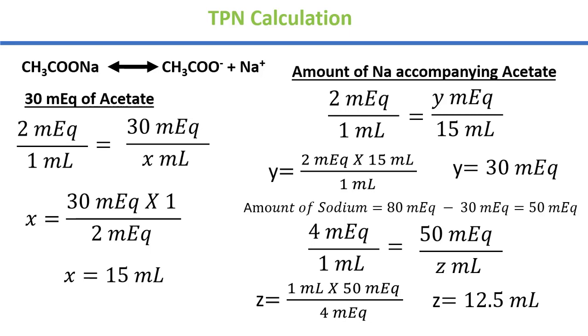So you have 15 mL and 12.5 mL. And you have volume make up for one liter. Then you have one liter TPN to calculate.